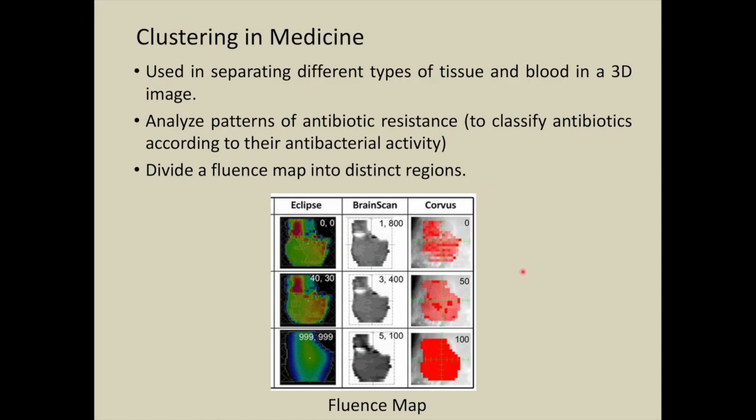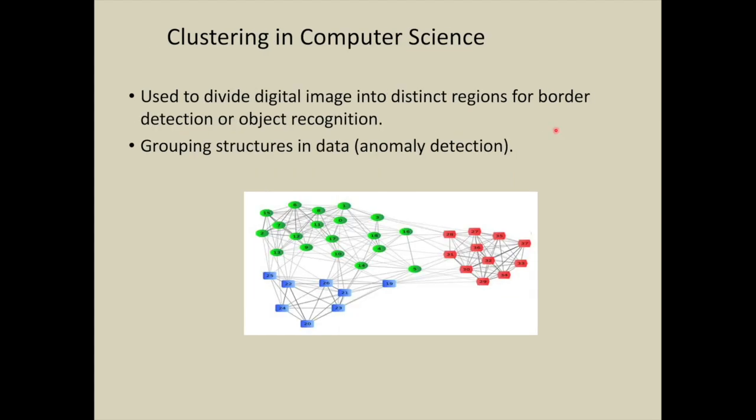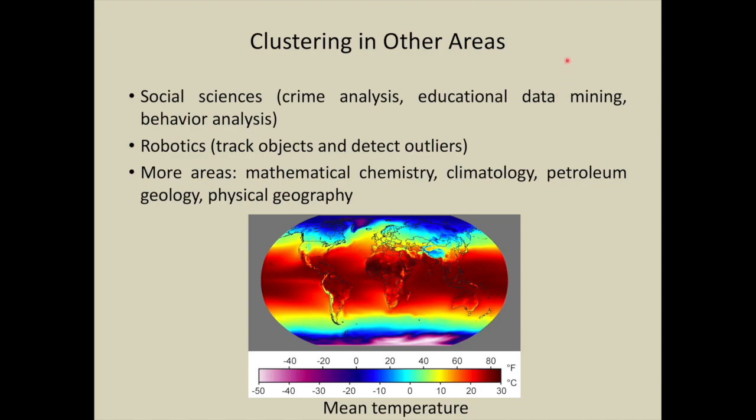Clustering in business or marketing: clustering is used in segmenting groups of customers for goods, grouping shopping items into a set of unique products. Clustering in computer science is used to divide digital images into distinct regions for border detection or object recognition, or grouping structures in data such as in anomaly detection.